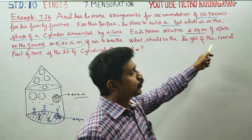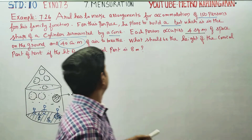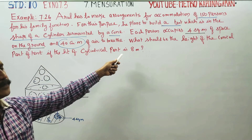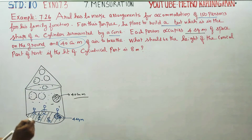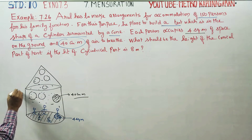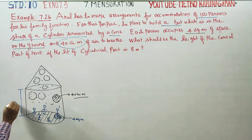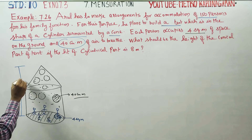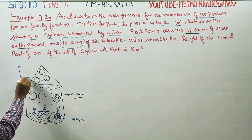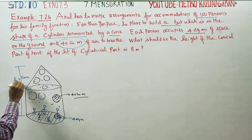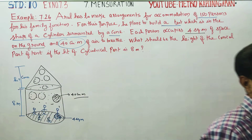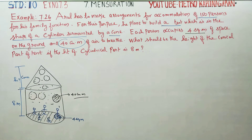What should be the height of the conical part of the tent, if the height of the cylindrical part is 8 meters? In this concept, we will start with finding the height of the cone.